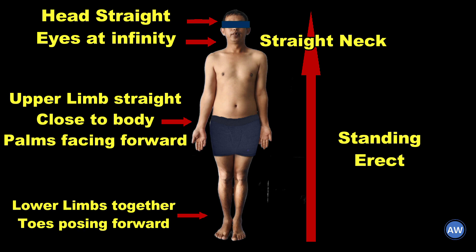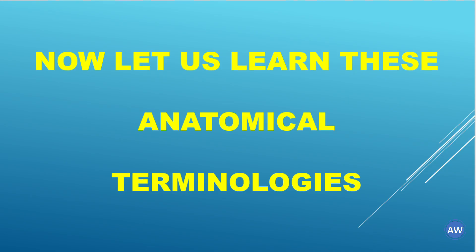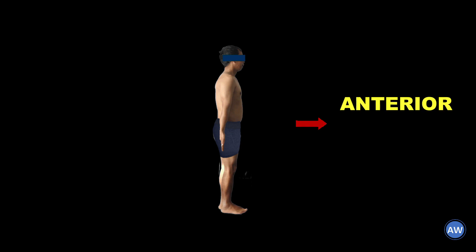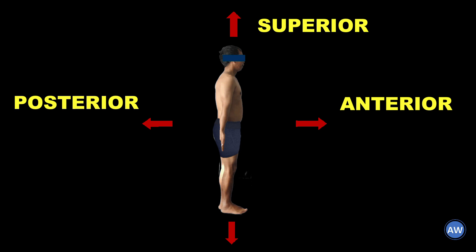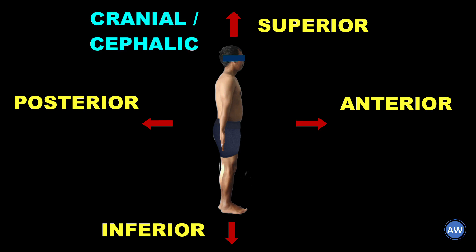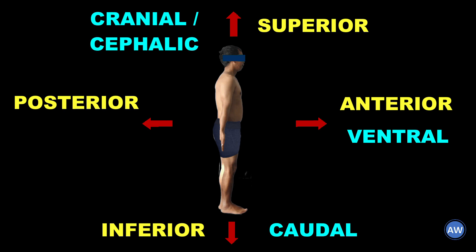With the toes pointing forwards. Now let us learn these anatomical terminologies. Anterior denotes the front side of the body. Posterior denotes the back. Superior refers to the upper end. Inferior refers to the lower end. Synonymously, the term cranial or cephalic is used for superior, that is towards the cranium or head. Similarly, for inferior the term caudal is used, which means towards the tail or lower end. Ventral, which means towards the belly, is used sometimes for anterior, and dorsal, which means towards the back, is used for posterior.